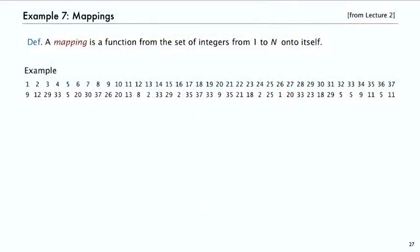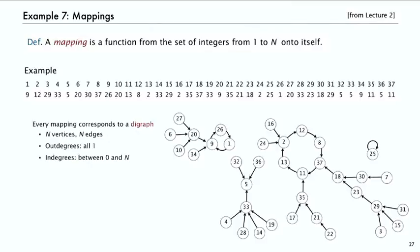So a mapping is a function from the set of integers from one to n onto itself. This is from lecture two. And we can represent every mapping with a digraph where every node has out degree one. There's an arrow from every node to some other node.